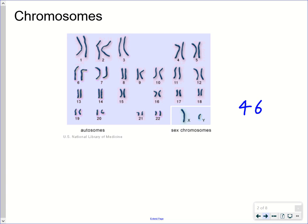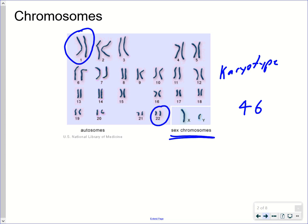This particular arrangement of chromosomes is referred to as a karyotype — a picture of the chromosomes arranged starting at the upper left with chromosome pair number one, going to chromosome pair number 22 at the lower right, and then the sex chromosomes at the far lower right. All chromosomes except the sex chromosomes are referred to as autosomal chromosomes. Chromosomes are arranged into pairs — pairs one through 22 are the autosomal chromosomes.